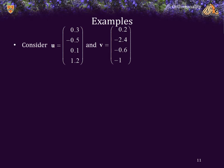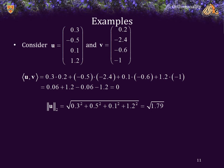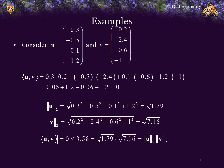Consider these two vectors. If we calculate the inner product, we get 0.06 plus 1.2 minus 0.06 minus 1.2, which is of course 0. So these two vectors are orthogonal. However, we can still calculate the two-norm of u, which is the square root of 1.79, and the two-norm of v, which is the square root of 7.16. Very clearly, the absolute value of the inner product, which is 0, is less than 3.58, which is the product of these two square roots — the product of the two 2-norms.